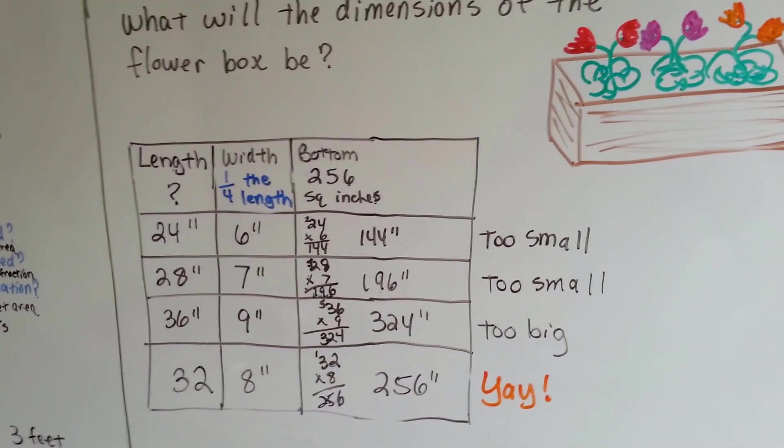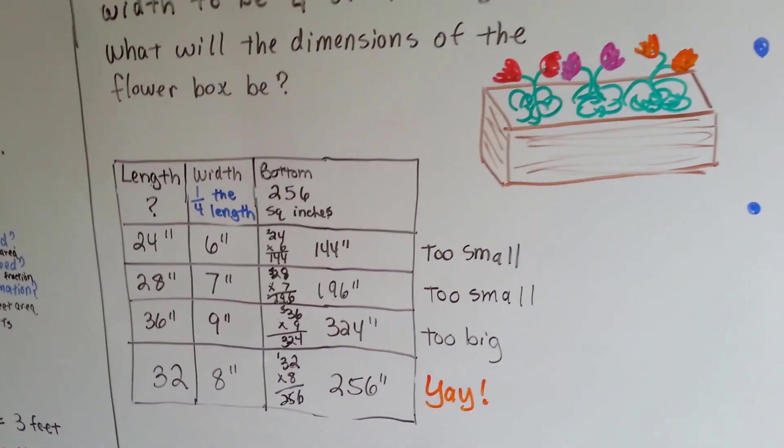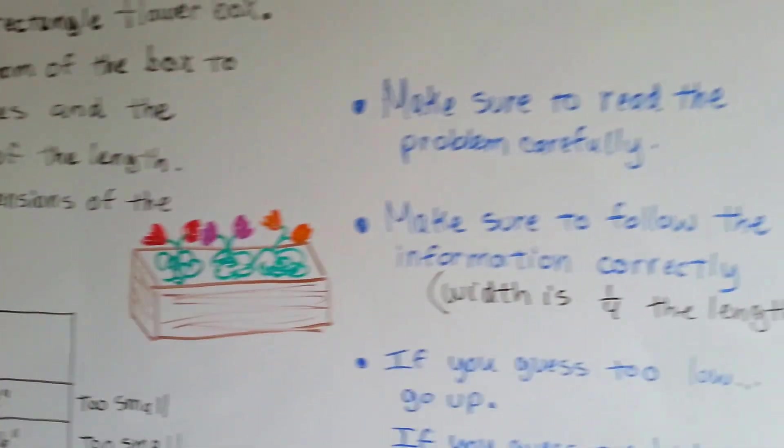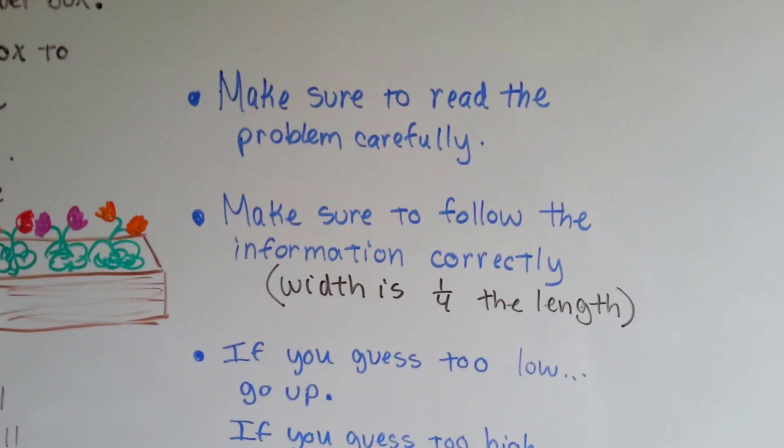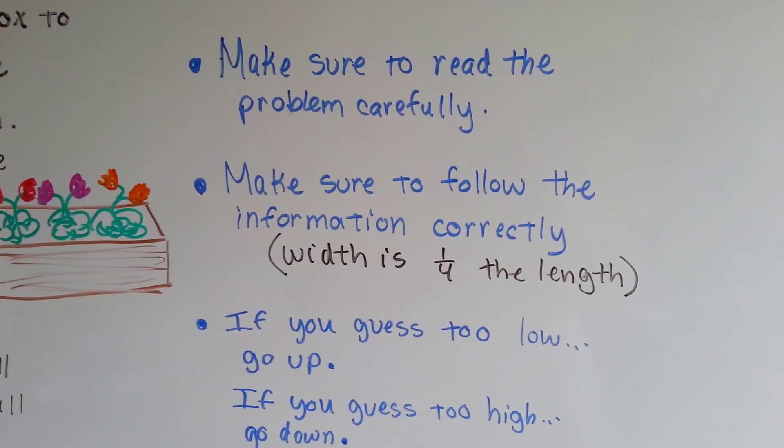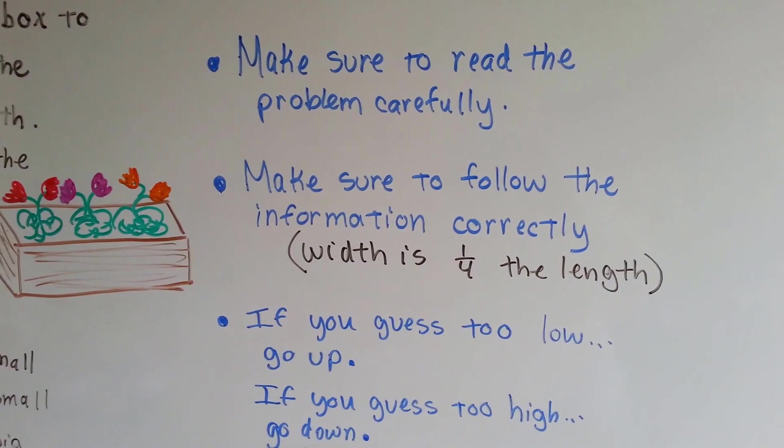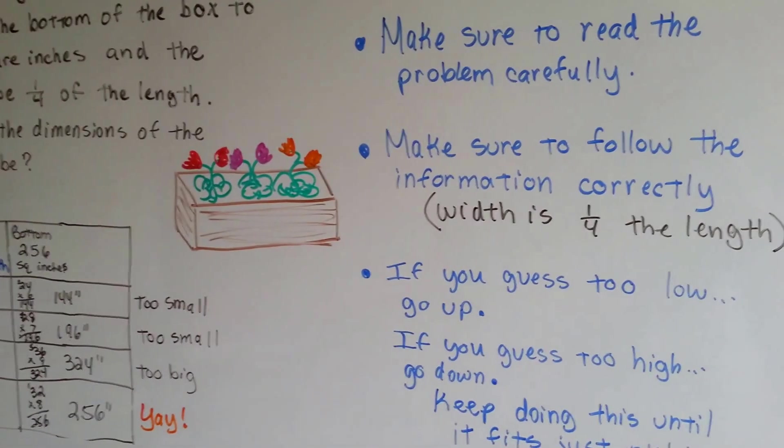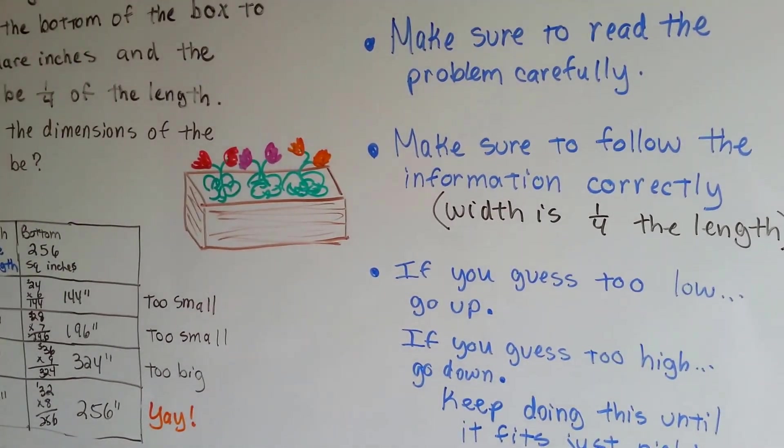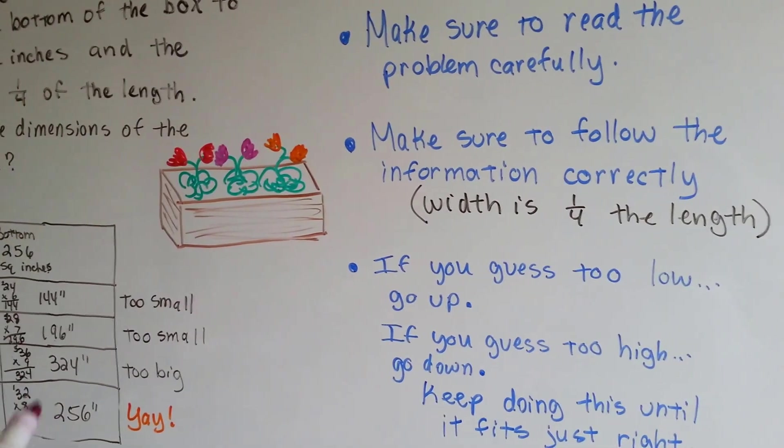So see, we wouldn't have gotten the answer unless we did keep guessing and checking and guessing and checking. So, make sure to read the problem carefully. Make sure to follow the information correctly. What if we didn't pay attention to the fact that it had to be one-fourth? We could have come up with something else that equaled 256.